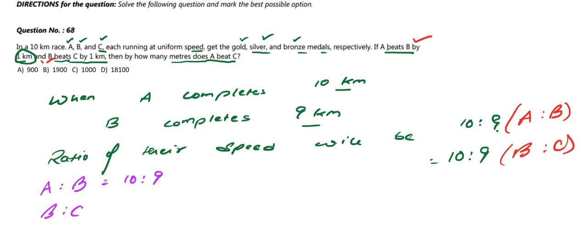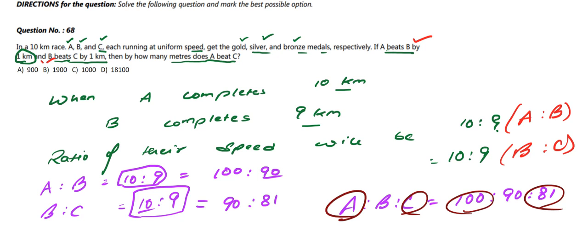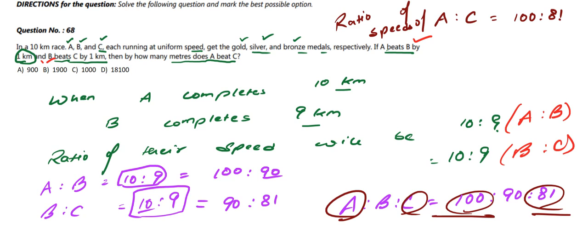We have A:B = 10:9 and B:C = 10:9. To combine these, we rewrite A:B as 100:90 and B:C as 90:81. So the combined ratio A:B:C = 100:90:81, meaning the ratio of A's speed to C's speed is 100:81.